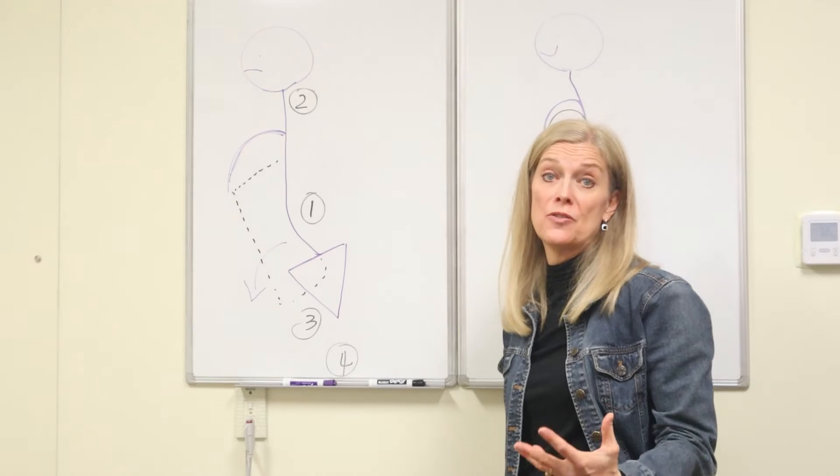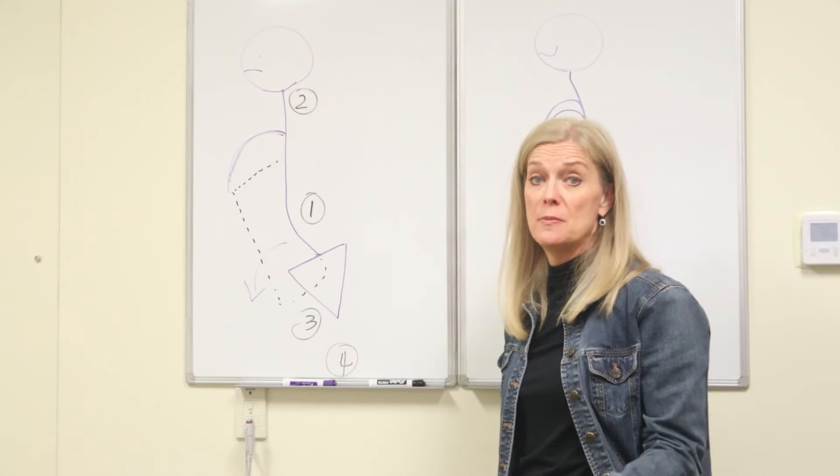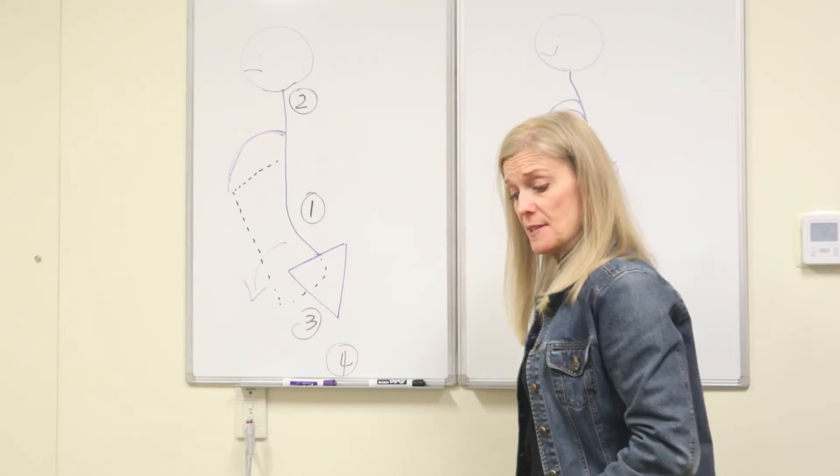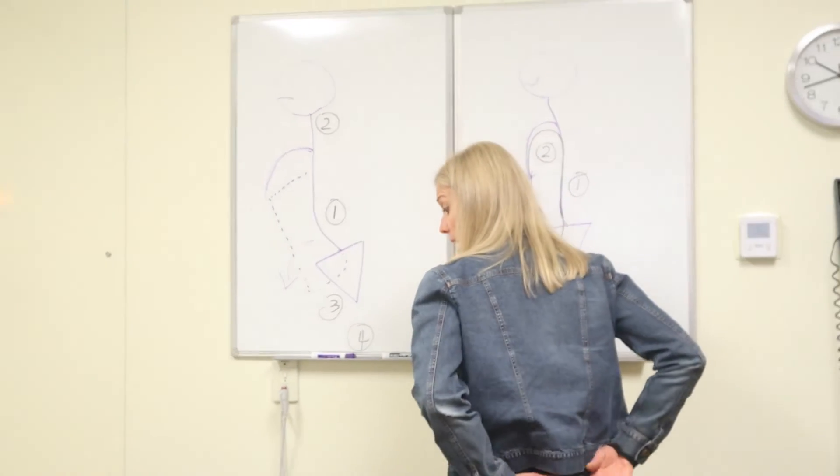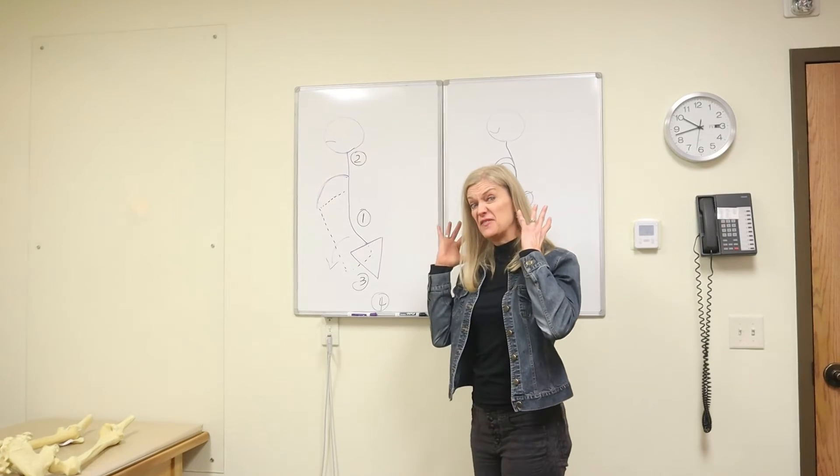So when this is happening on both sides, we tend to see people that have a lot of lower back and SI tension, a lot of neck tension, traps that get overworked, pecs that get overworked.